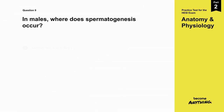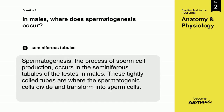The correct answer is C. Seminiferous tubules. Spermatogenesis, the process of sperm cell production, occurs in the seminiferous tubules of the testes in males. These tightly coiled tubes are where the spermatogenic cells divide and transform into sperm cells.